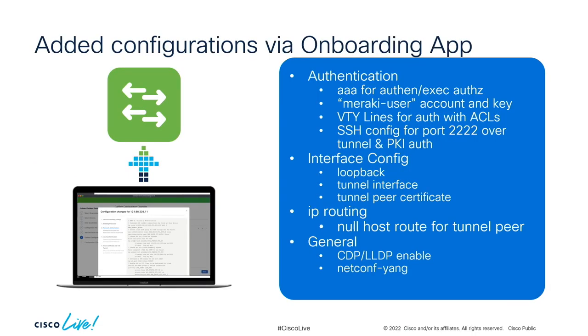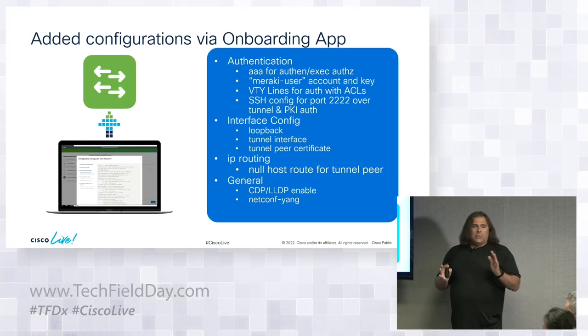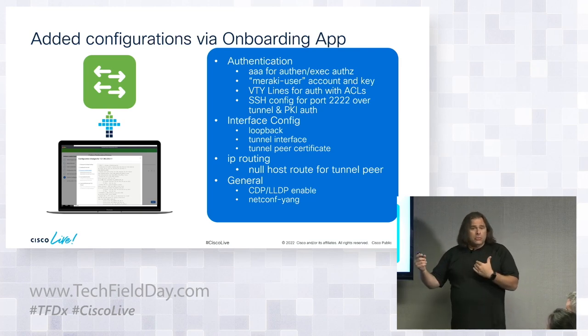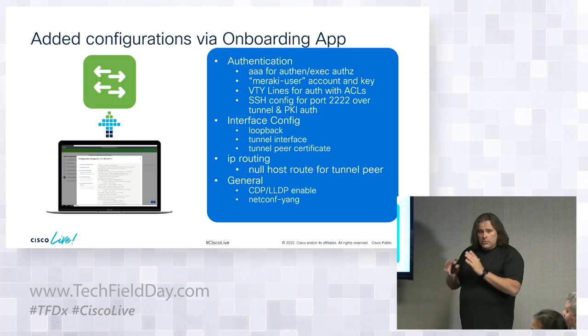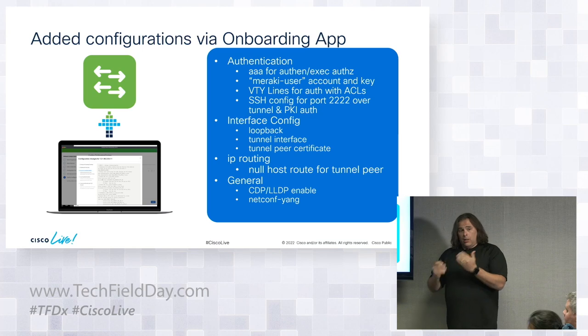What changes on the box when you onboard in monitor mode: we do AAA, set up a Meraki user, put some VTY ports on there, lock it down, do SSH. There are a couple other interface config pieces — we need a loopback, we're basically making a tunnel back to the Meraki dashboard to securely transmit data. We set up a tunnel, tunnel peer certificate, enable IP routing on the box if it doesn't already exist, and then CDP and NetConf YANG. Real simple, minimal config to onboard the box.